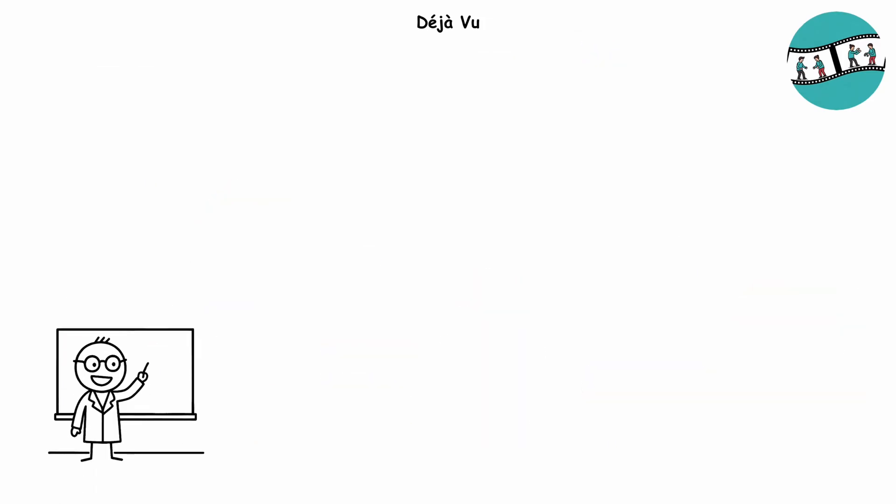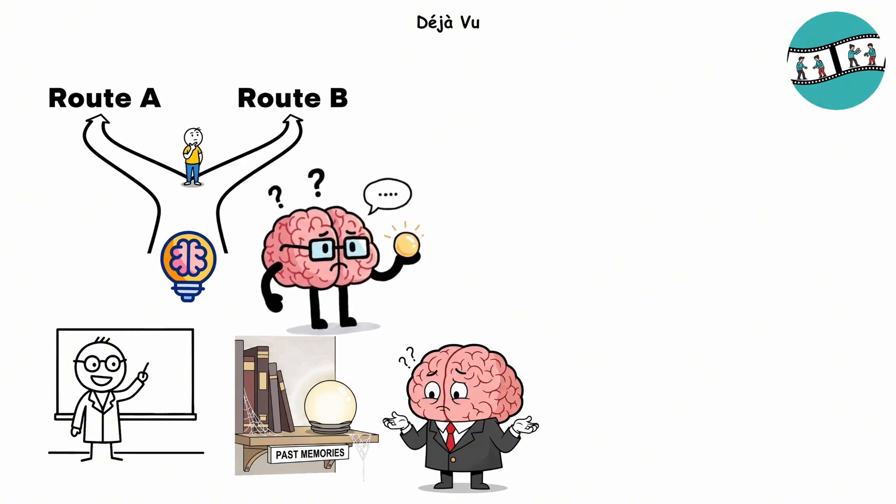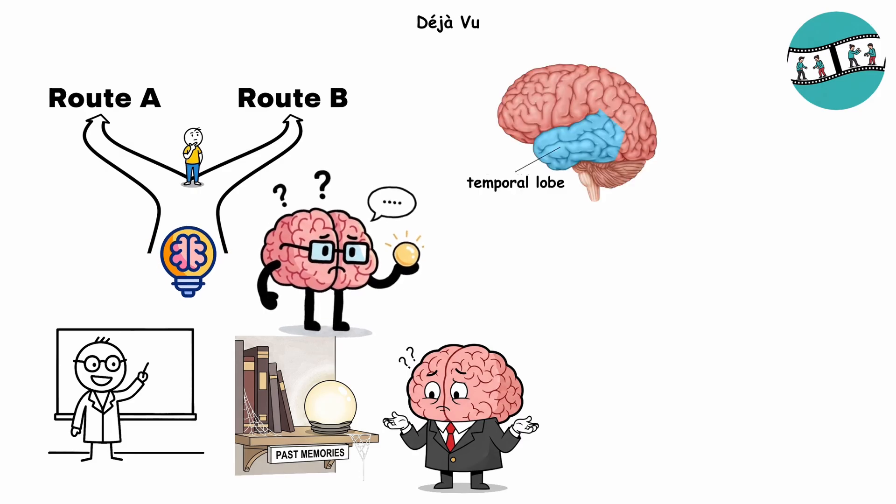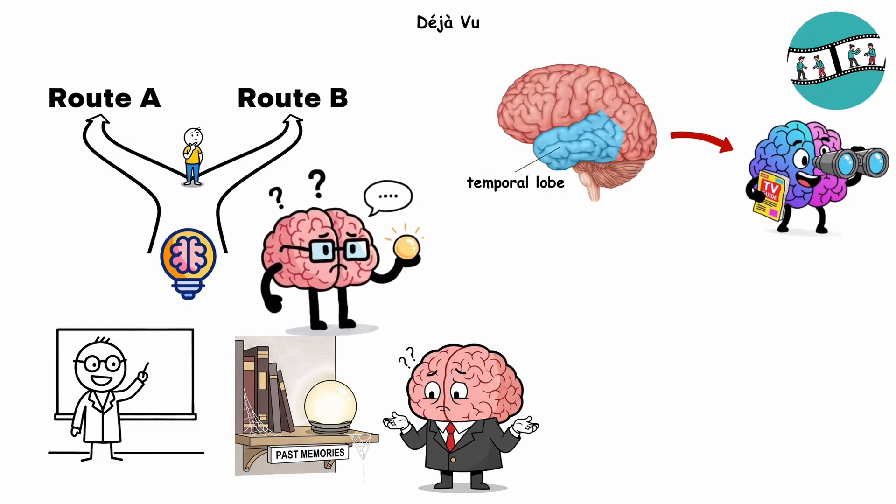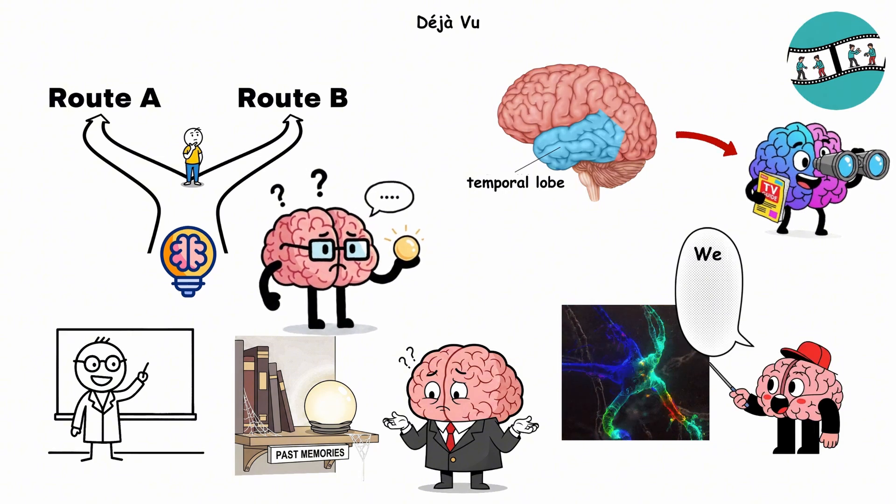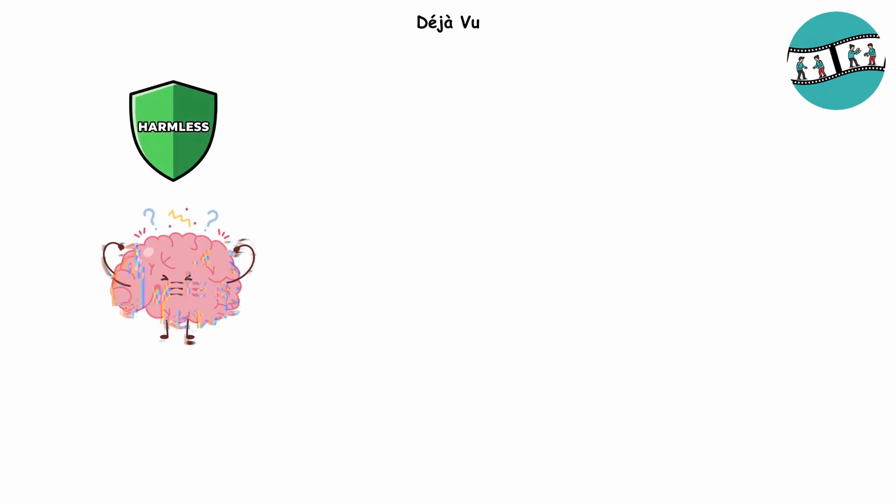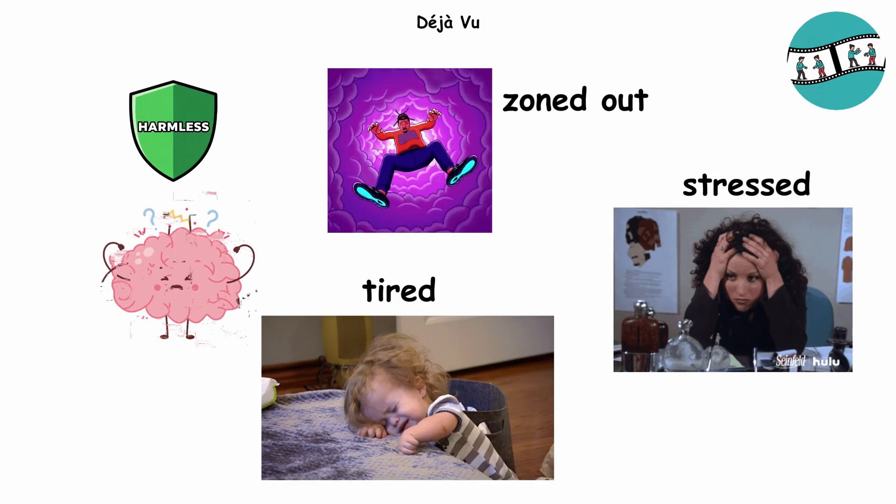Scientists think this happens because the same information takes two different neural routes. If one arrives out of sync, the second gets mislabeled as a memory. Another idea is your temporal lobe, the episode guide of your brain, sometimes fires too early, shouting we've seen this one, even though you haven't. It's a harmless, glitchy double stream, more likely to show up when you're tired, stressed, or zoned out.